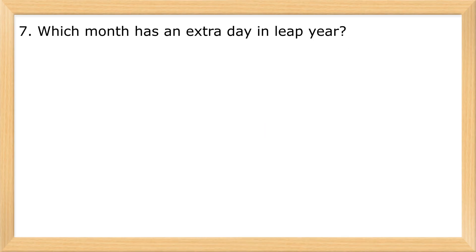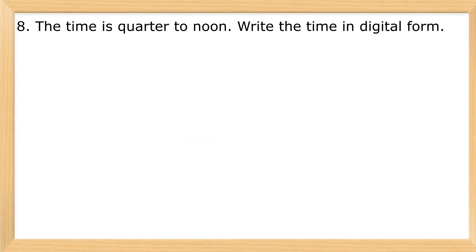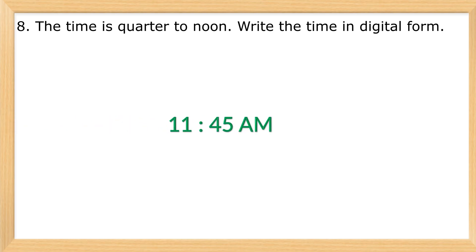7. Which month has an extra day in a leap year? February — 29 days. 8. The time is quarter to noon. Write the time in digital form. 11:45 a.m.